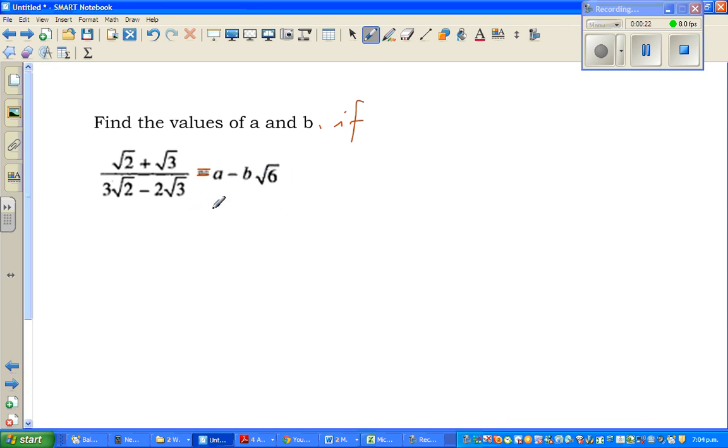Okay, now this is an example of surd form. You need to simplify this. So let us take the left-hand side and write LHS for left-hand side. The left-hand side is root 2 plus root 3 over 3 root 2 minus 2 root 3.